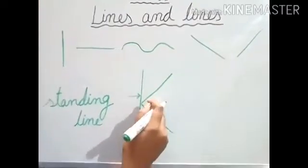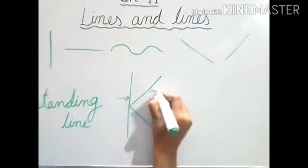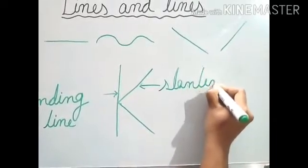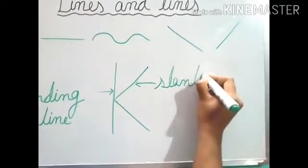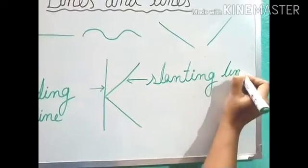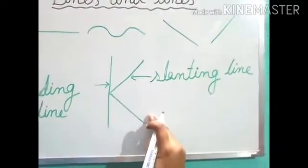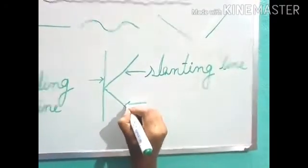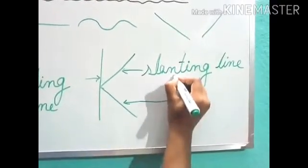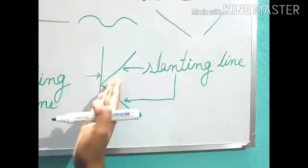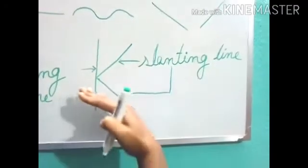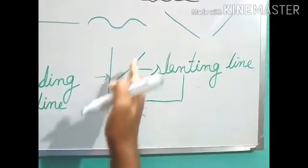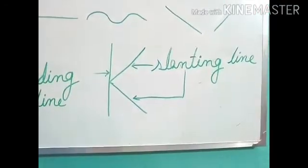Now, this line is looking like this, no? So this is what type of line? Slanting line. And this one is also bent like this, so both — like this or like this — are Slanting line. If the line is like this, then also slanting line, and if the line is bent like this, then also slanting line. So this is Standing line and these two are Slanting line.